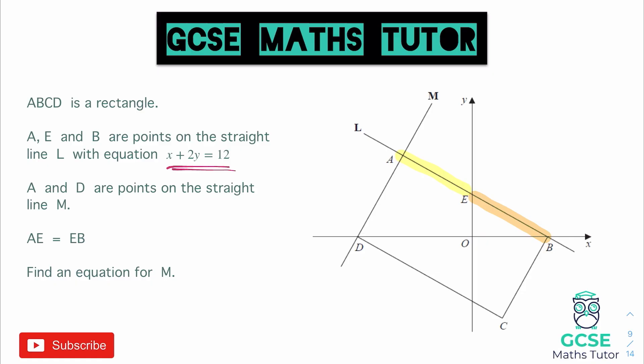Now let's just think about what we've got here. We have the line L where E is the midpoint, we know that it's a rectangle, so these two lines, the line L and the line M, are perpendicular, so therefore we can think about our perpendicular gradients using a negative reciprocal. So we have the equation for L, which is our important part. As we have the equation for L, we can figure out the gradient of L, and once we've got the gradient of L, we can get the gradient of M.